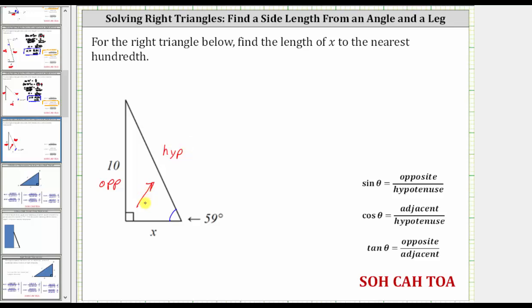The adjacent side to the given angle is the side of the angle that's not the hypotenuse. Therefore, this is the adjacent side to the given angle.